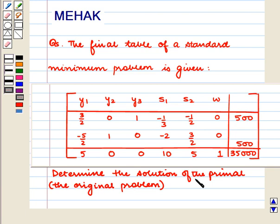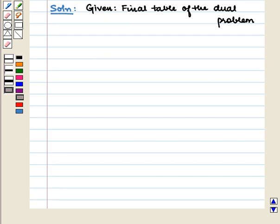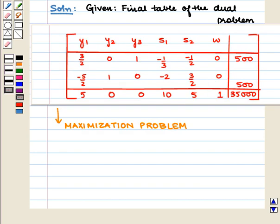Determine the solution of the primal, that is the original problem. We are given the final table of the dual problem. We have to find a solution of the original standard minimization problem from this table. This table gives the solution of the dual which is a maximization problem.